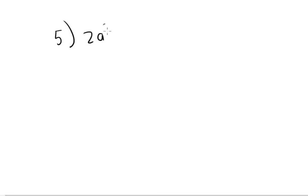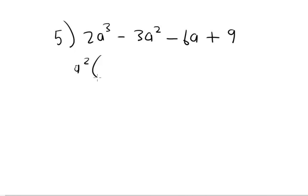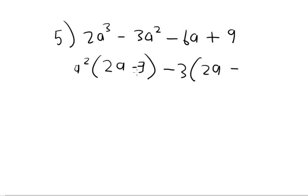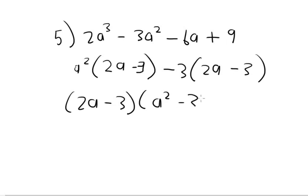Number 5: 2a cubed minus 3a squared minus 6a plus 9. Group the first two and last two terms. Take out a squared as a common factor from the first group, leaving 2a minus 3. Take out minus 3 from the second group, leaving 2a minus 3. So the highest common factor is 2a minus 3, and we're left with a squared minus 3. The answer is (2a minus 3)(a squared minus 3).